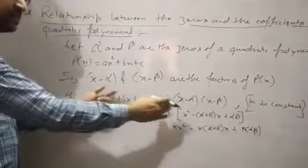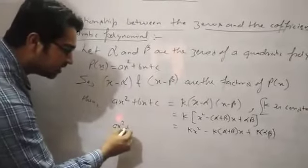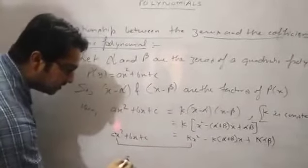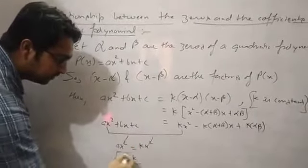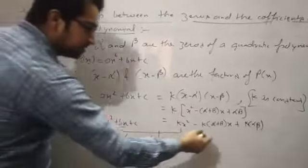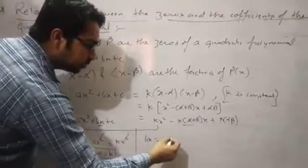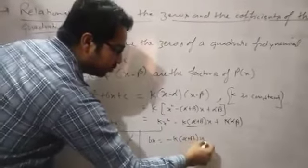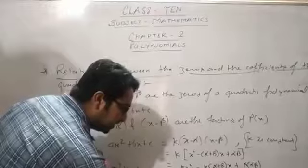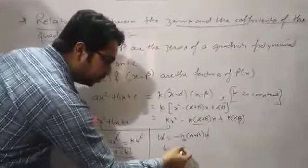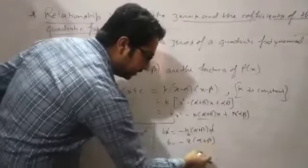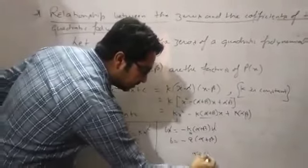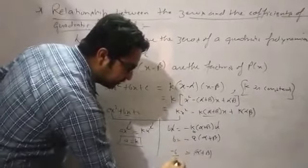When we compare the left-hand side ax² + bx + c with the right-hand side, we see that ax² = kx², so a = k. Then comparing the x terms: b = -k(alpha + beta). Cancelling x and substituting k = a, we get b = -a(alpha + beta), therefore alpha + beta = -b/a.